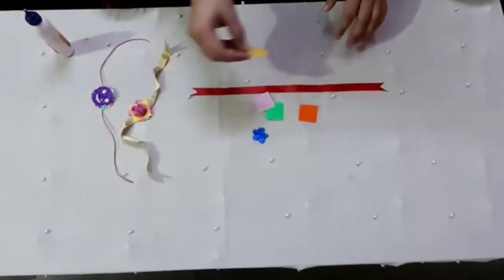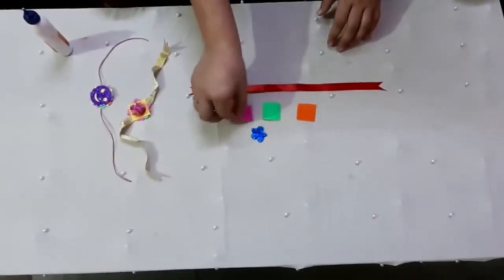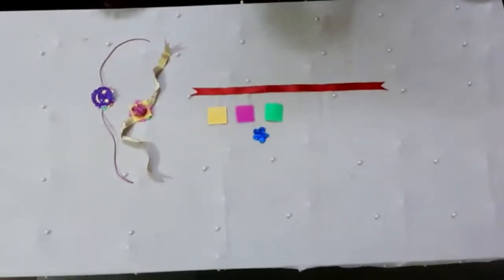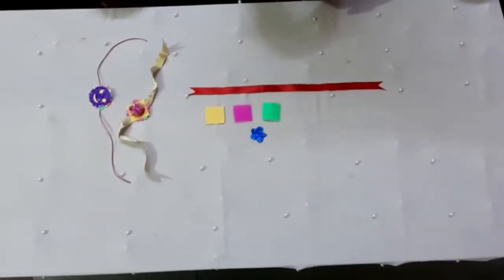Now let's start. First we will take one square and paste it in the mid of the ribbon.